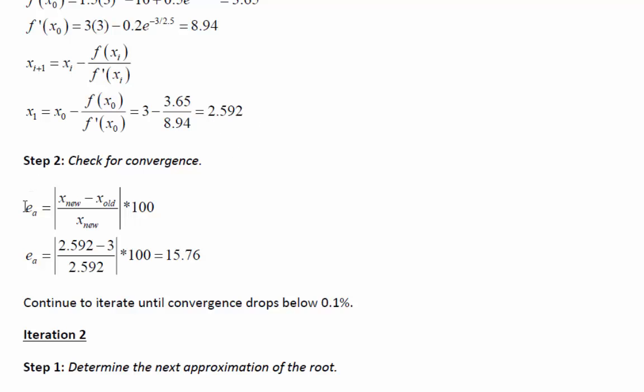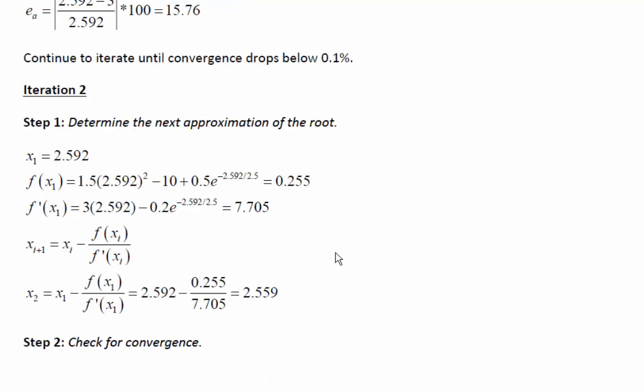We can check the convergence using the approximate relative error. The current estimate minus the old estimate divided by the current gives us an error of 15.76%. That is not below the 0.1% threshold, so we continue with iteration two.